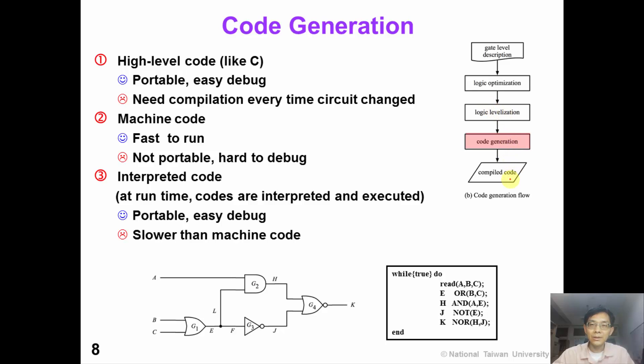Now in the third step, we need to generate the code. There are three kinds of target code. High level code such as C can be generated. The advantage is that C code is very portable and easy to debug.